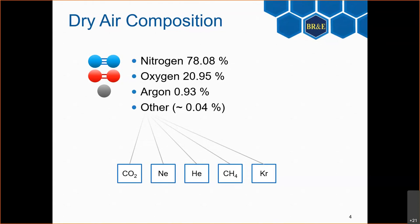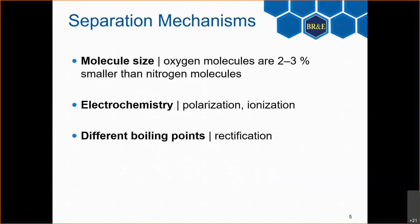Both nitrogen and oxygen are diatomic molecules, while argon as a noble gas is monoatomic. Importantly, nitrogen and oxygen are not the same: nitrogen has a triple bond while oxygen has a double bond. That affects the size of the molecule and its behavior, which we can use as an advantage when it comes to separation.